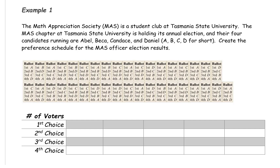We want to create the preference schedule for the MAS officer election results. So we have all 37 ballots, and what we want to do is summarize this ballot information into a table.